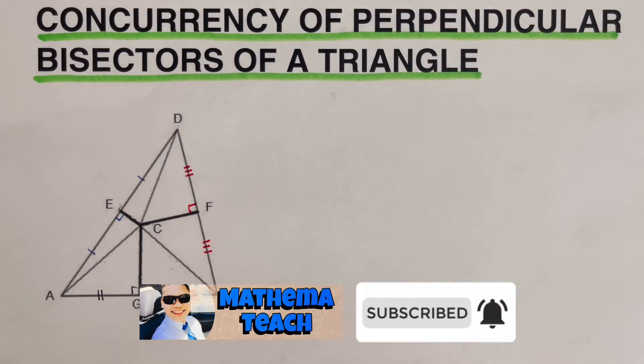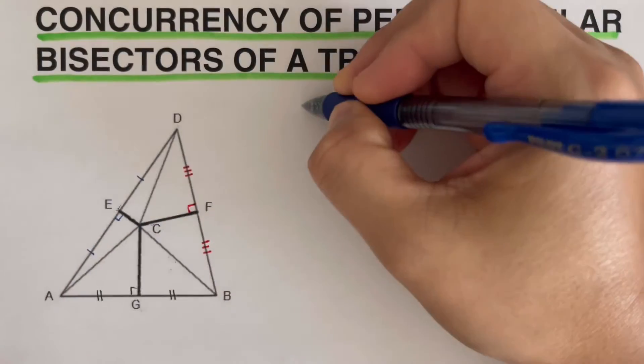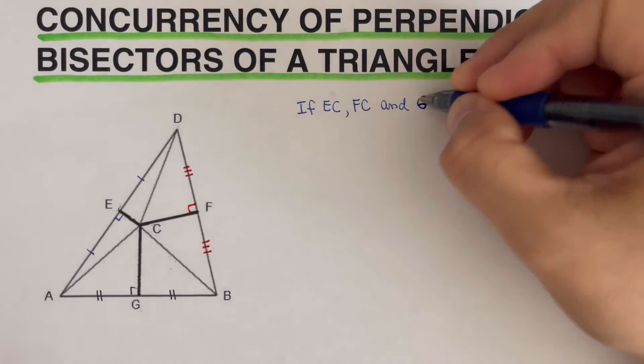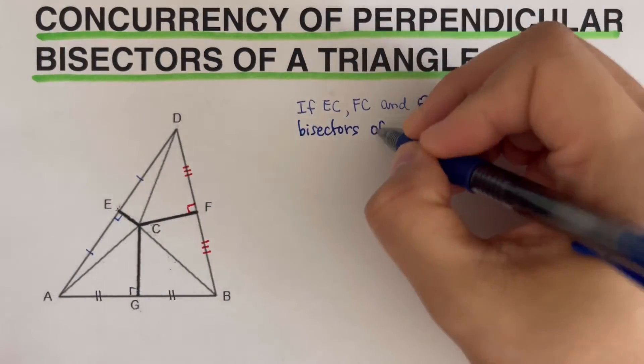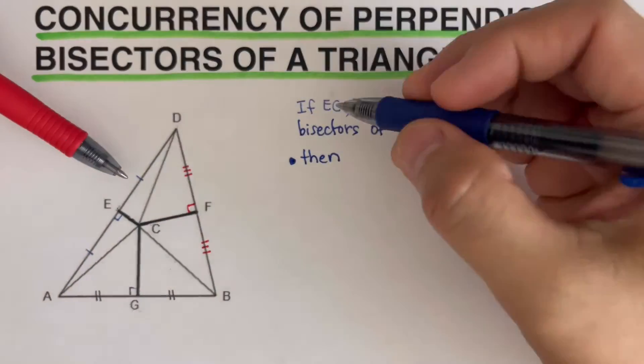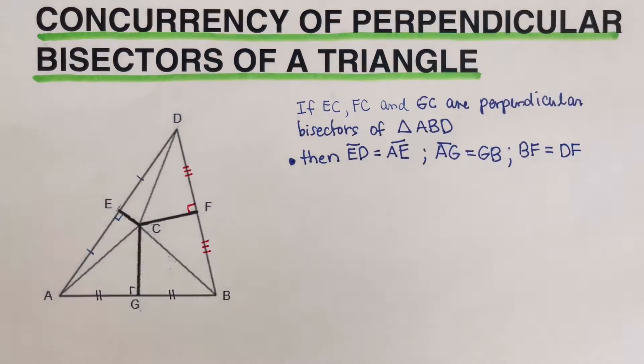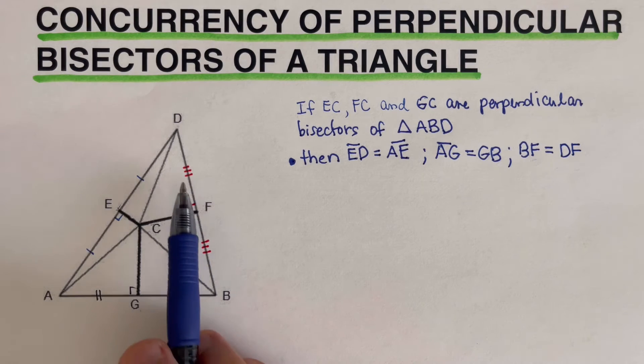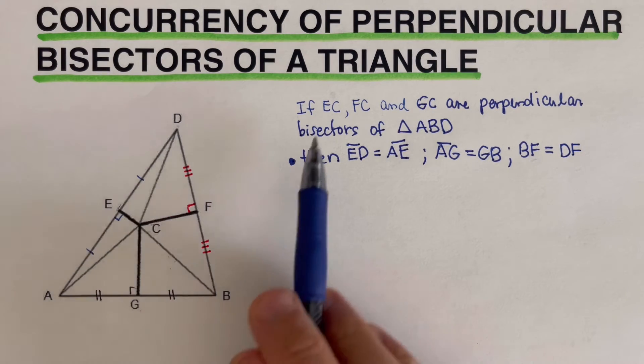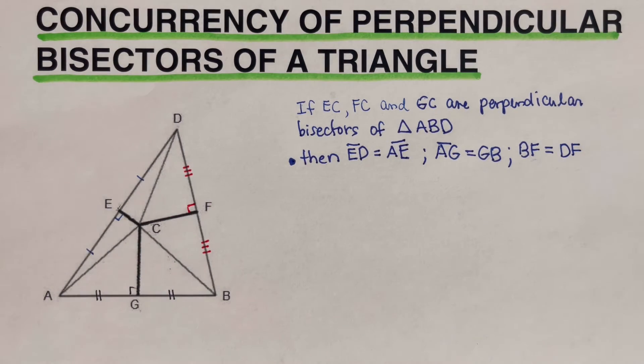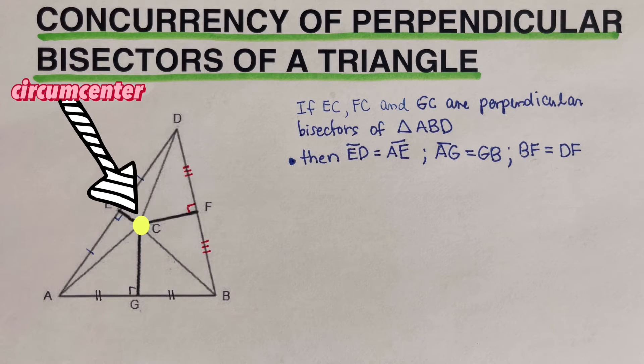So I'm going to write that in statement up here. So what I did was I just changed these symbols that we have here into statements. Now I'd like you to look at this very carefully. This point of intersection that we have here, there is a special name for this. We call this as the circumcenter.